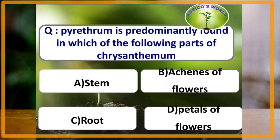Pyrethrum is predominantly found in which of the following parts of chrysanthemum? The answer is achenes of flowers. Achenes of flowers of chrysanthemum consist of pyrethrum.